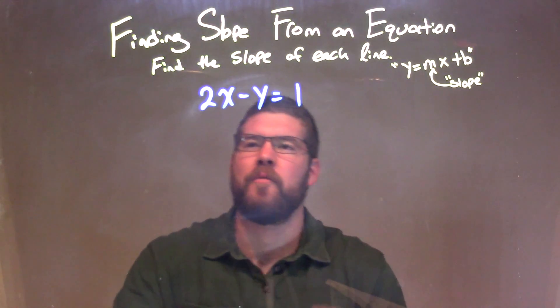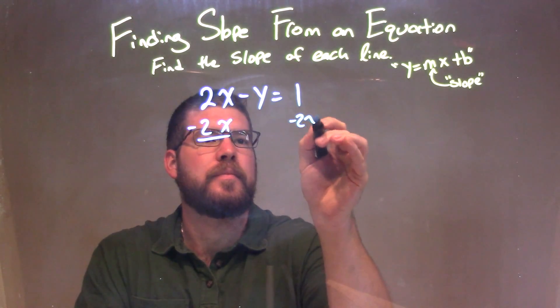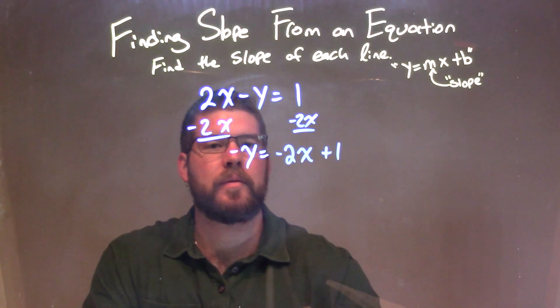To isolate y by itself, my first step is to subtract 2x from both sides. So now we have negative y equals negative 2x plus 1.